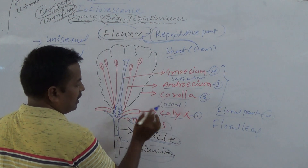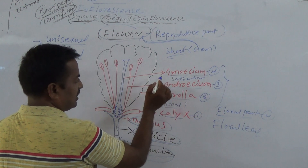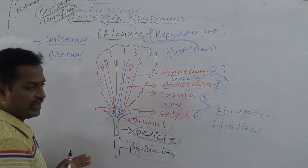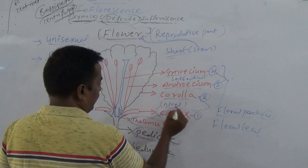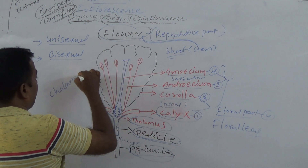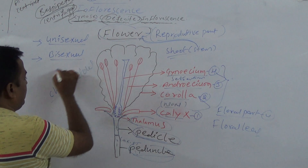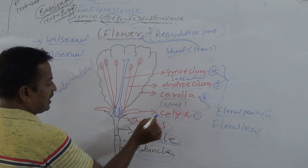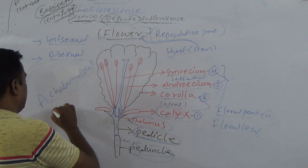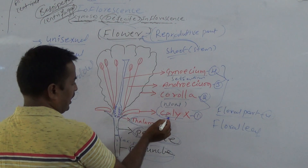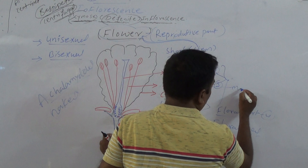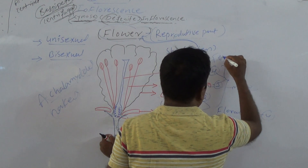Calyx and Corolla are called non-essential parts, and Androecium and Gynoecium are essential parts because they are involved in the fertilization process. If the flower has Calyx and Corolla, the flower is called a Chlamydeous flower. If Calyx and Corolla are absent, that flower is called an Achlamydeous flower — nothing but naked flowers. Androecium represents the male reproductive part, and Gynoecium represents the female reproductive part.